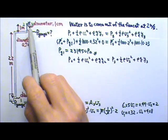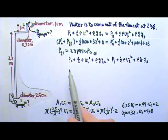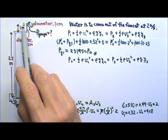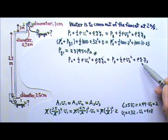To find the gauge pressure right before the faucet, we can look at 2 and 3, right before the faucet and at the faucet opening. 2 and 3 have about the same height, so we can just cancel the rho g y terms.